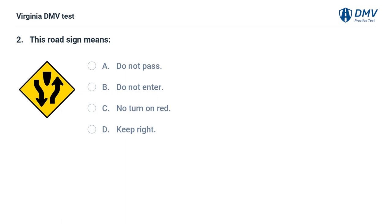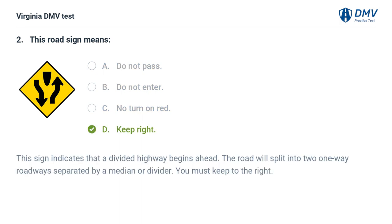This road sign means: A. Do not pass, B. Do not enter, C. No turn on red, D. Keep right. The correct answer is D: Keep right. This sign indicates that a divided highway begins ahead. The road will split into two one-way roadways separated by a median or divider. You must keep to the right.